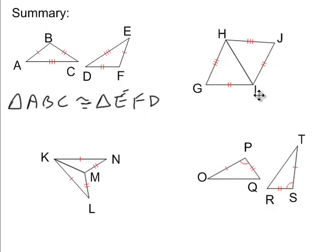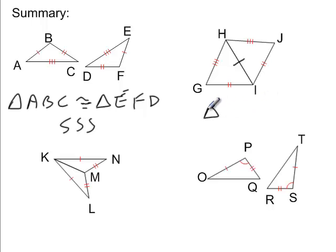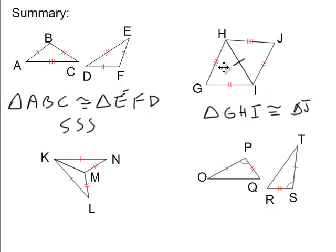Now let's be careful here. These two triangles are congruent by side-side-side. You might say there are only two sides that are congruent, but we have the reflexive property — this shared side is congruent to itself. So triangle GHI is congruent to triangle — G is between two and three marks, J is between two and three marks, H is between one and three marks, and I is between one and two marks, giving triangle GHI congruent to triangle GJH — wait, checking: I is between one and two, and that works.